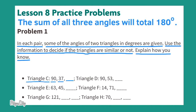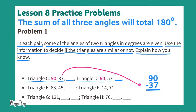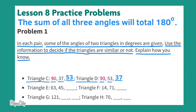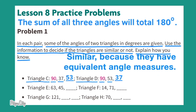Triangle C has 90 degrees, 37 degrees, and an unknown angle. Triangle D has 90 degrees, 53 degrees, and an unknown angle. For triangle C: 180 minus 90 equals 90, and 90 minus 37 equals 53 degrees. So triangle C's angle measures are 90, 37, and 53 degrees — the same as triangle D. These triangles are similar because they have the same angle measures.